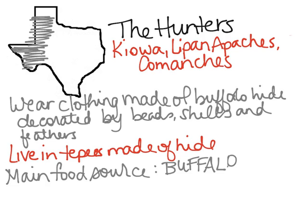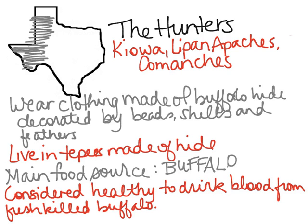The hunters' main food source is the buffalo — they use it more than any other tribe. While other tribes also use the buffalo, not to the extent that the hunters do. They use it for food, clothing, their home, and the bones as weapons, using every single part they possibly can. They also believe it's very healthy to drink the blood from a freshly killed buffalo, considered a rite of passage and a symbol of being a warrior.